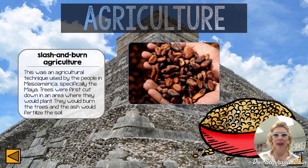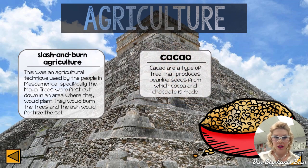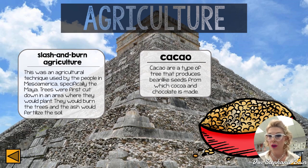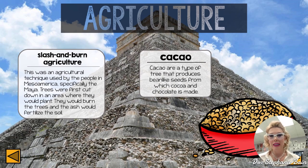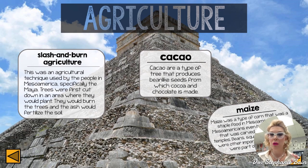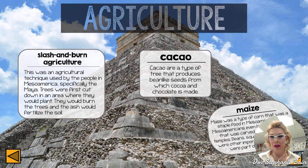As for what Mesoamerican peoples grew: slash-and-burn agriculture was a technique used specifically by the Maya, where trees were cut down, burned, and the ash fertilized the soil. Cacao trees produce bean-like seeds from which cocoa and chocolate are made. Maize — a type of corn — was a staple food in Mesoamerica, so important that they even built temples for it.